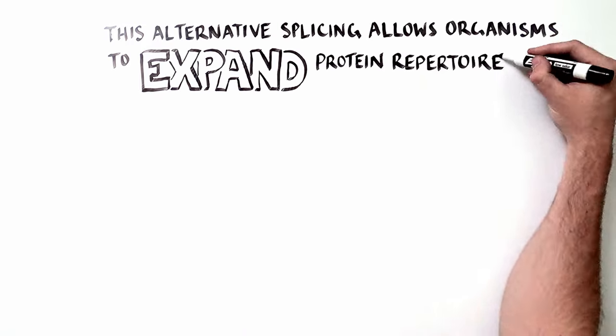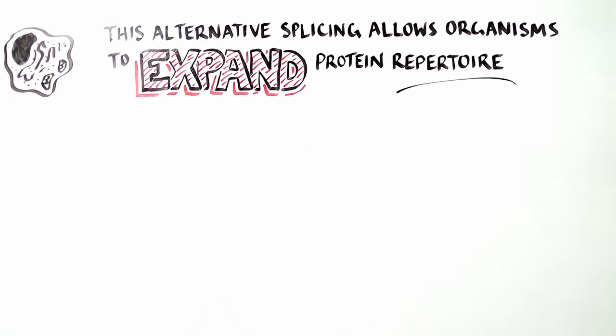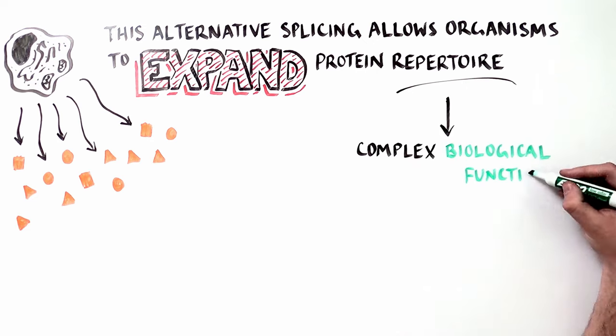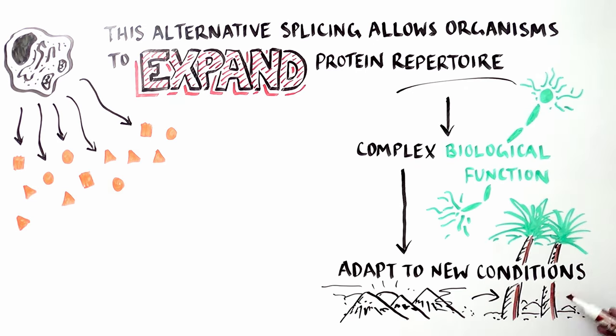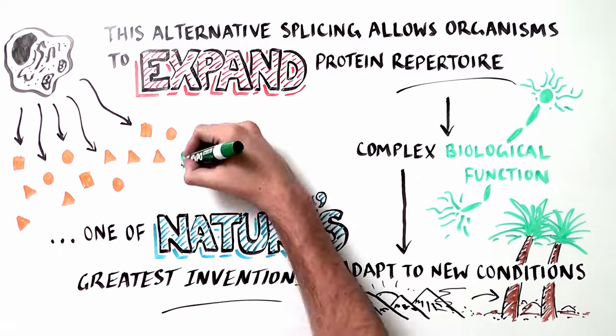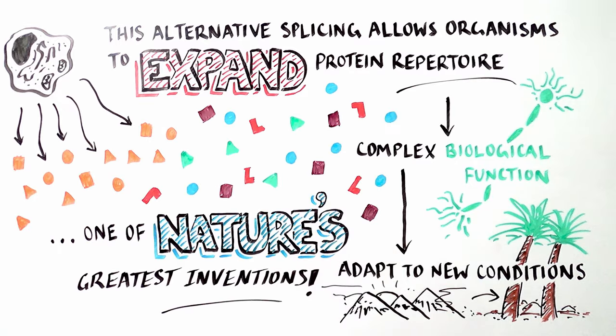Alternative splicing enables organisms to expand the repertoire of proteins, which allows them to evolve complex biological functions, as well as adapt to new environmental conditions. It is truly one of nature's greatest inventions.